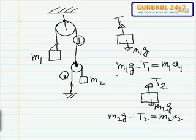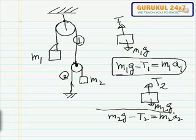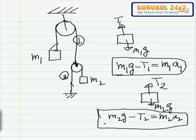So this is our first equation and this is our second equation. Now obviously we will not be able to solve it because we've got four unknowns: T1, T2, a1, a2. We need two more equations to solve this problem.